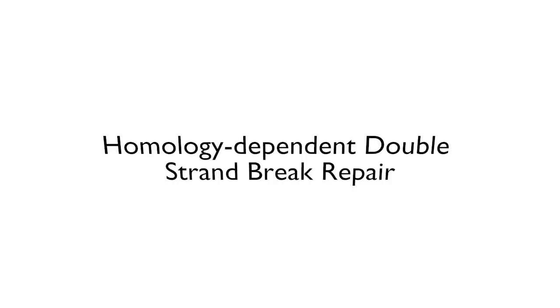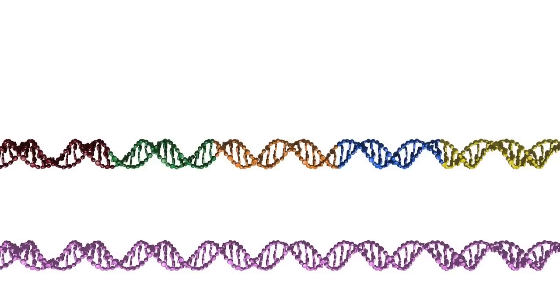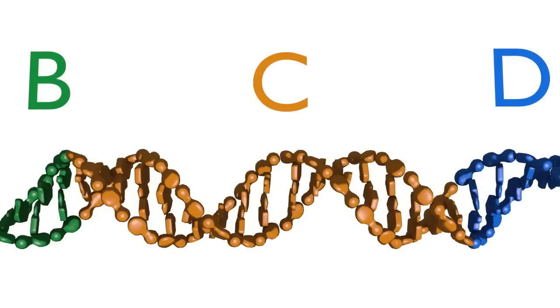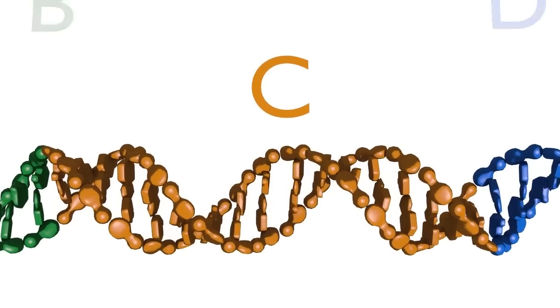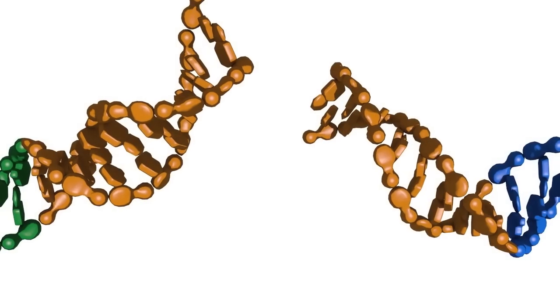To see how a cell repairs a double strand break using DNA homology-dependent double strand break repair, let's imagine that we have a parental DNA duplex containing the sequence ABCDE. We then imagine that the duplex is broken by a double strand break in the C region.